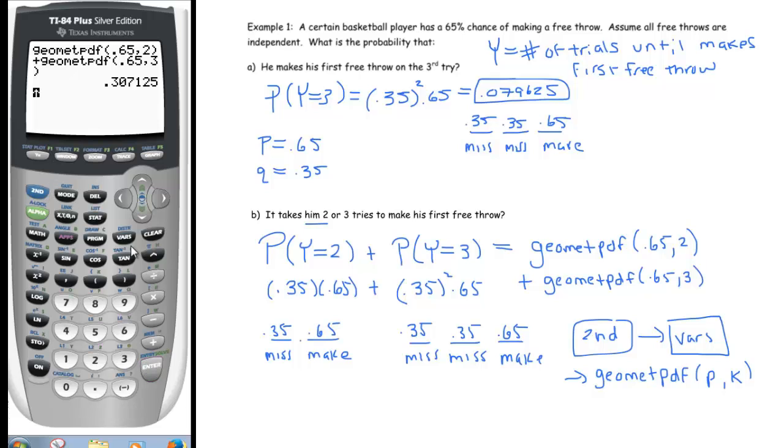When we do that, I'm going to copy down the individual answers so you can check. You don't have to go back, just hit second enter and then change that to a three and you'll get .079625. You could just add those up and when you do that you get .307125.